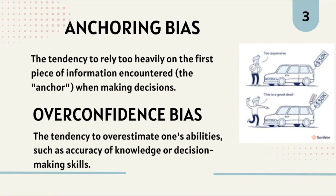Next is overconfidence bias: the tendency to overestimate one's own abilities, such as accuracy of knowledge or decision-making skills. It happens when individuals overestimate their own abilities or the accuracy of their predictions. For example, a person might believe they are an excellent driver despite having had several accidents, or a trader might take risky investments believing they can predict the market better than they actually can.